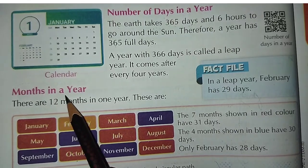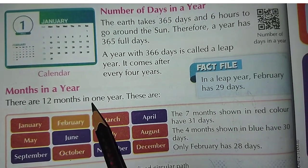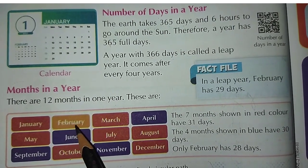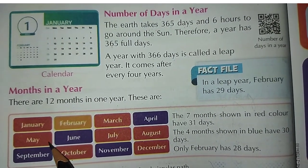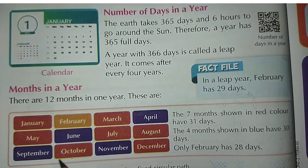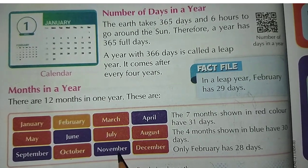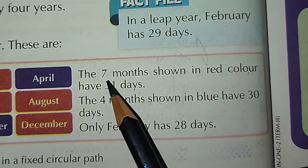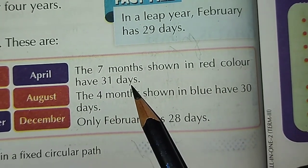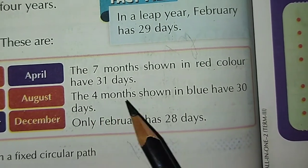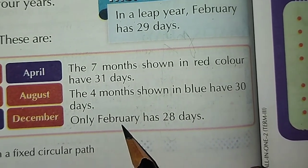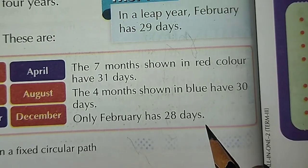Months in a year. There are 12 months in a year. These are January, February, March, April, May, June, July, August, September, October, November, December. The 7 months shown in red color have 31 days. The 4 months shown in blue have 30 days. Only February has 28 days.